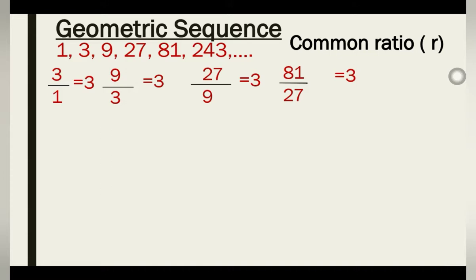To identify a geometric sequence, divide a term in the sequence by its preceding term. For example, 81 divided by its preceding term 27 gives you the ratio. When the ratio is common throughout, it makes the sequence a geometric sequence.